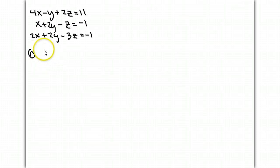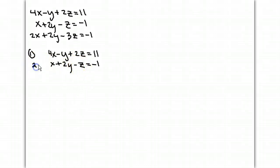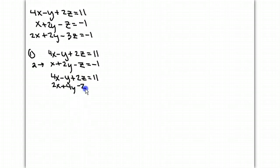Step 1: I'll take the first two equations, which are 4x minus y plus 2z equal 11, and x plus 2y minus z equal negative 1. I want to try to get rid of a letter — let me get rid of z. Since I have 2z at the top, I want a negative 2z at the bottom. It's already negative, so I'm going to multiply 2 through it. So rewriting: 4x minus y plus 2z equal 11, and below it 2x plus 4y minus 2z equal negative 2. When I add top to bottom, I get 6x plus 3y. The z's go away, and it's equal to 9.